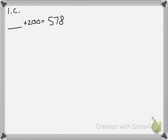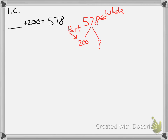Here's another one where they're trying to trip you up. I'm going to do a quick number bond to explain. We have blank plus 200 equals 578. Since 578 is the whole, and 200 is one of the parts, to find the missing part — represented by the blank — we have to subtract, turning this into a subtraction problem.